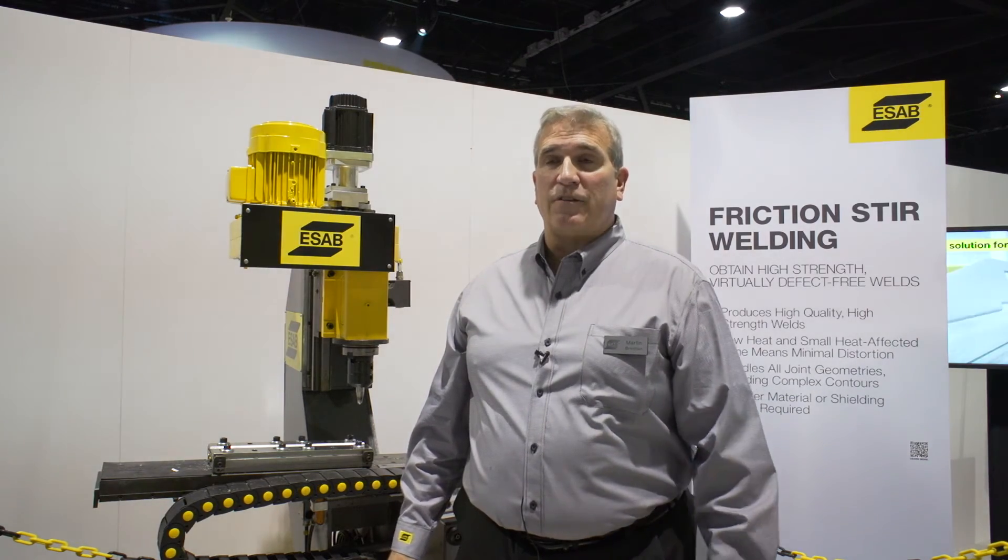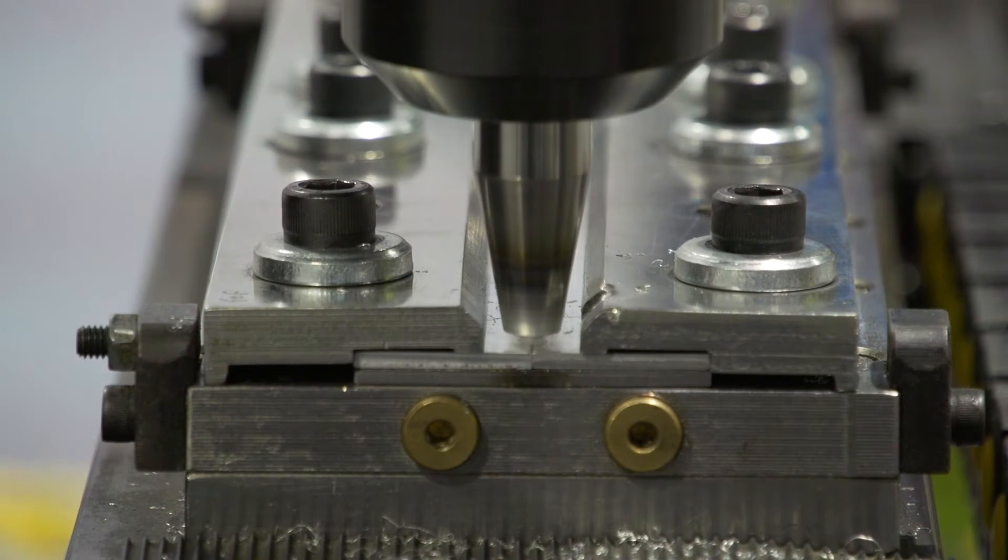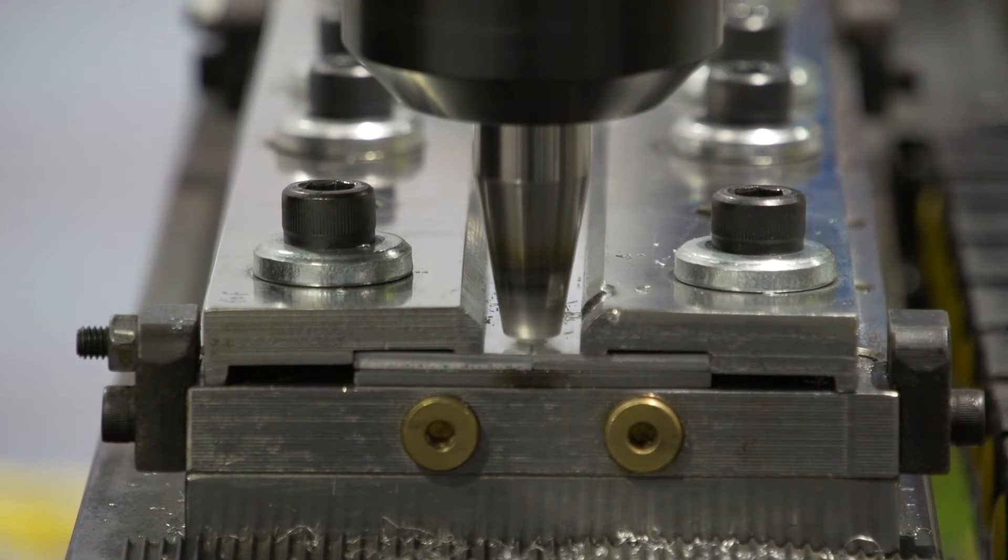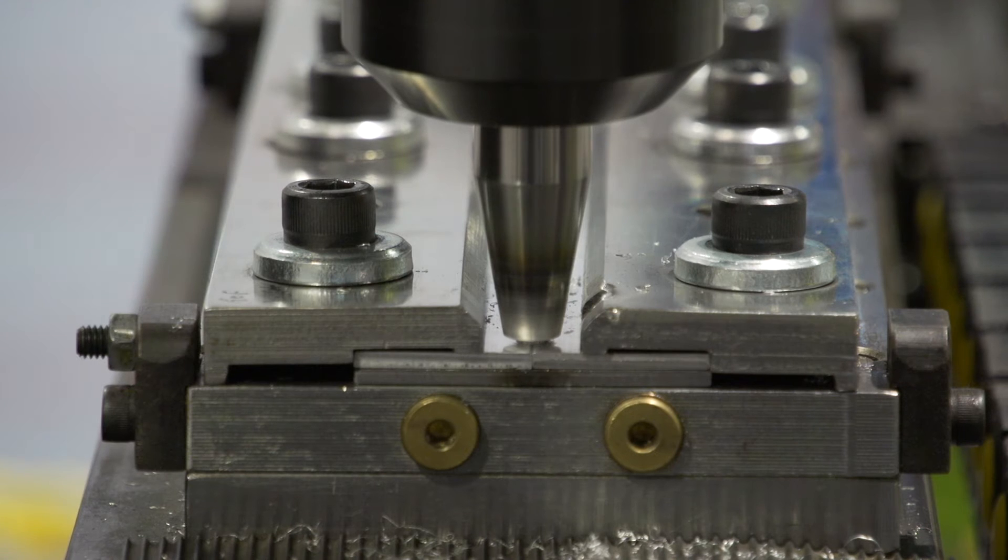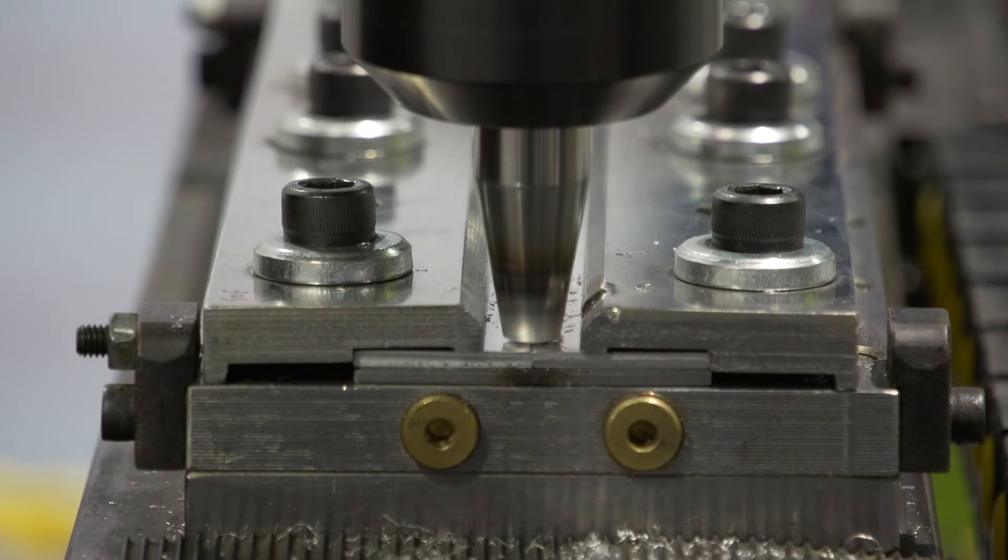Friction Stir Welding is a consolidated, solid-state process for joining materials together. It was developed for aluminum back in 1991.